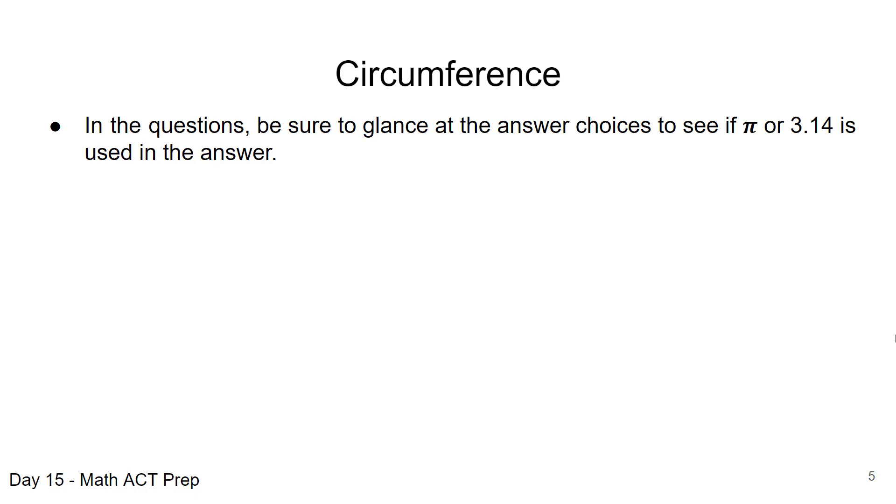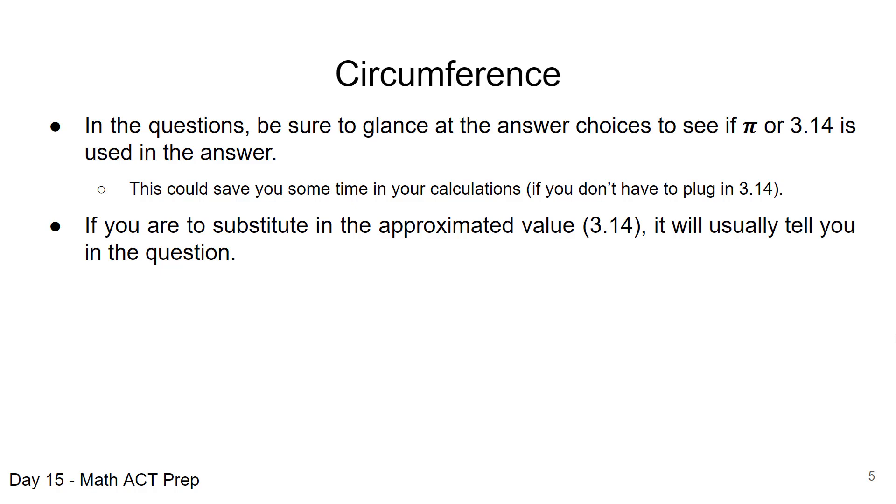Sometimes π is in there, and that's just going to save you a couple of seconds. You're not going to have to plug in that 3.14 and do the remainder of the calculation. You can just use π. If you have to use the 3.14, it's usually going to tell you to use that approximated value.